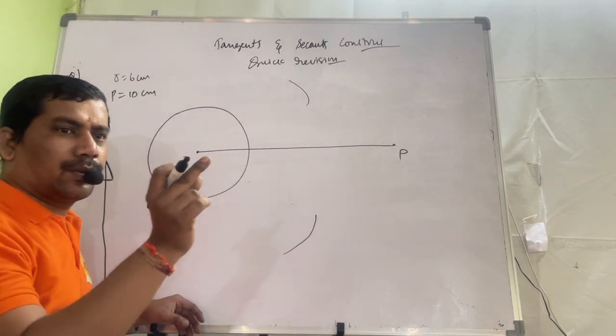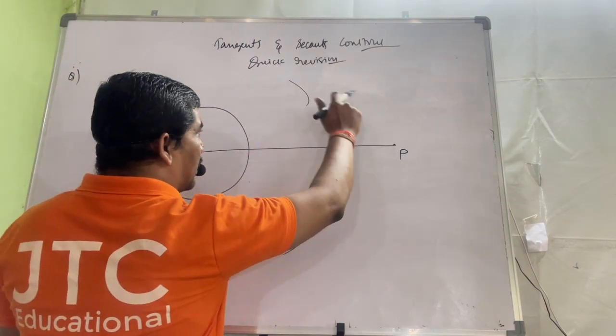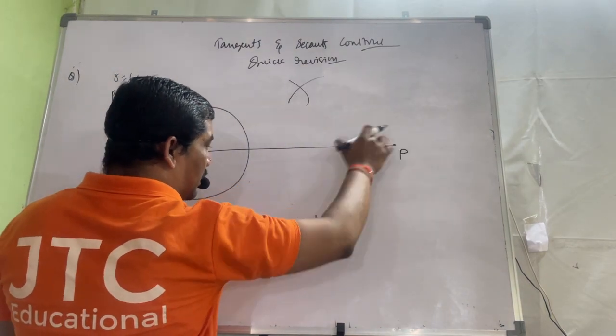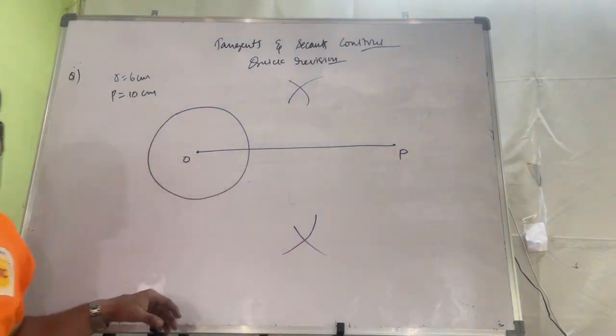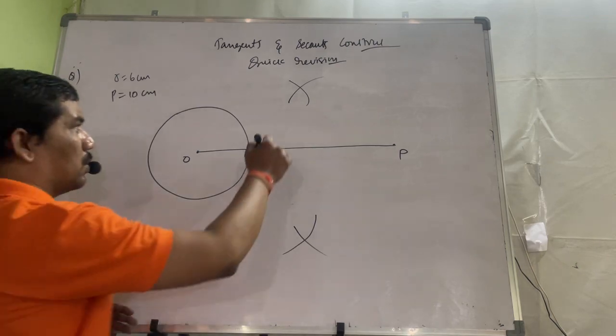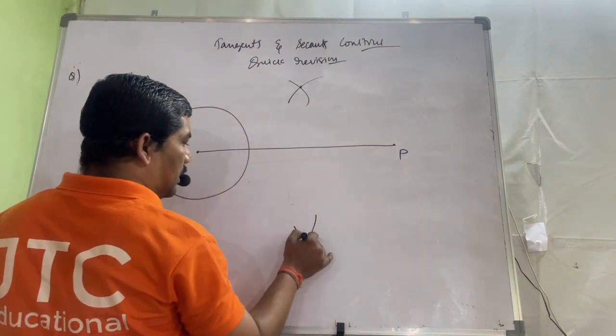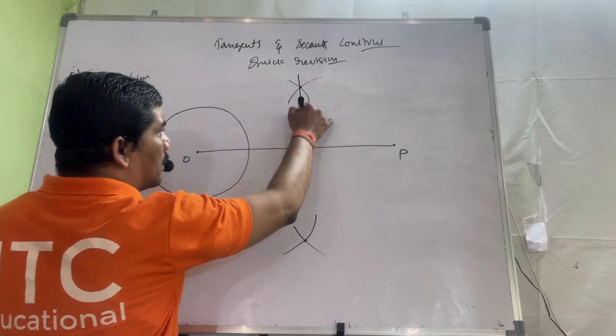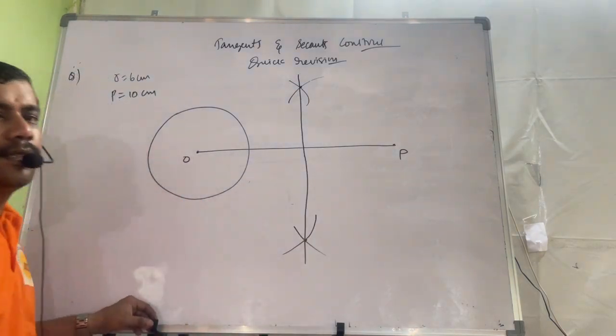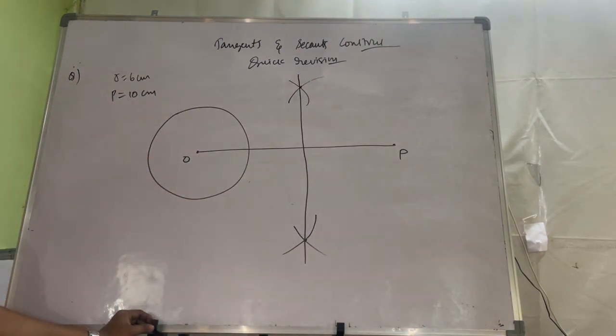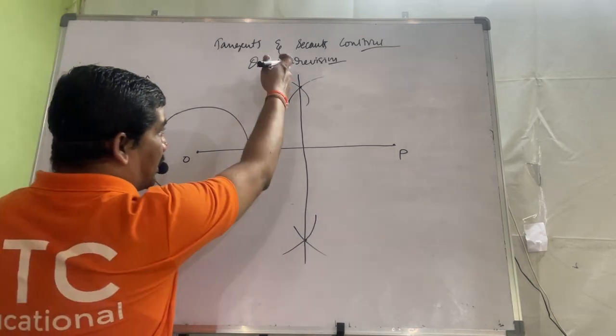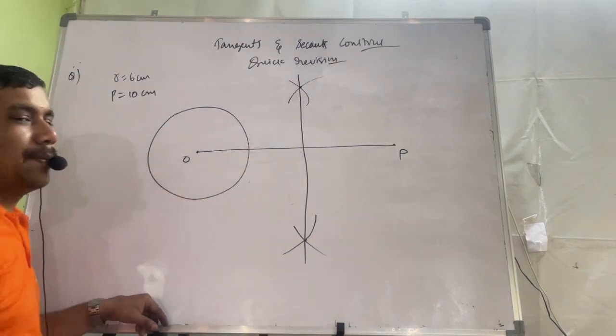Same setting, don't change setting now. Keep the compass one end here, cut this arc. From here, cut this arc. Now these two points you join with the help of ruler. This line, this is called now perpendicular bisector.